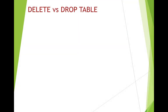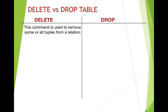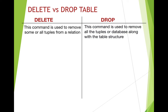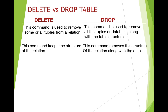Now let's do a side-by-side comparison. The DELETE command is used to remove some or all tuples from a relation — you can remove specific rows or all rows. The DROP command is used to remove all tuples or a database along with the table structure; it does not give you the option of removing only specific parts. DROP command can also be used to remove an entire database.